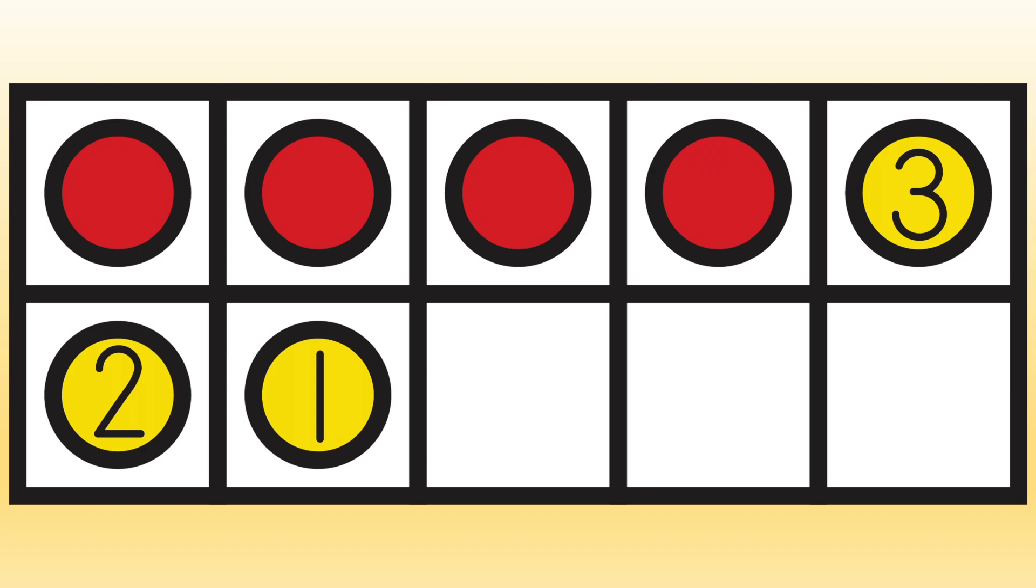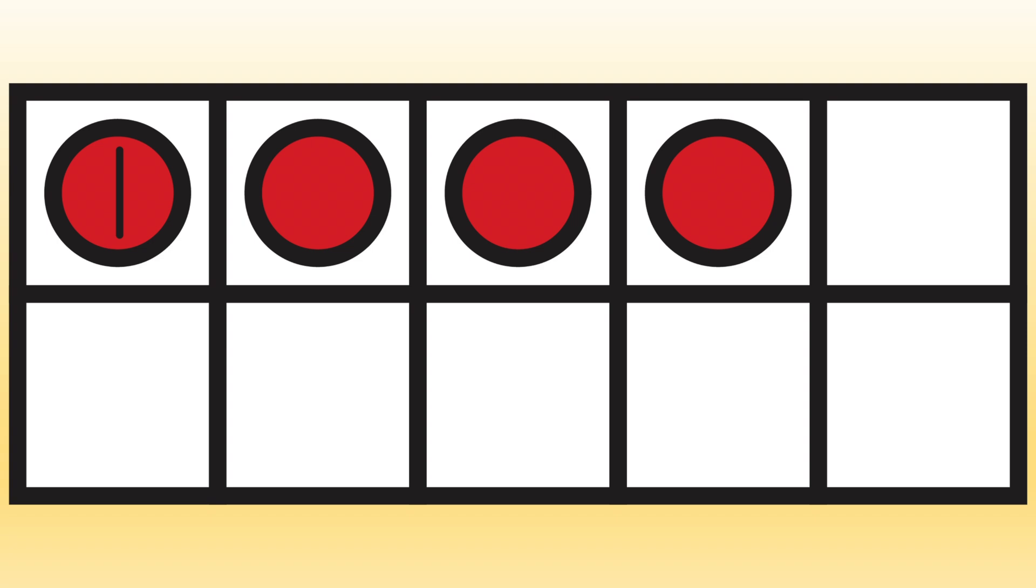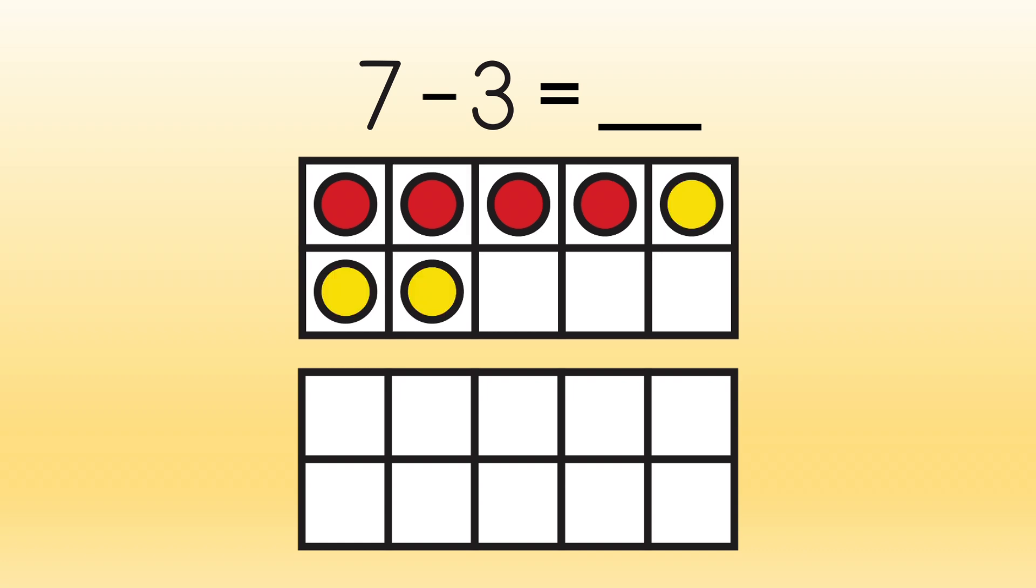Now we can look and see how many counters we have left in our top frame. 1, 2, 3, 4. So, 7 minus 3 equals 4.